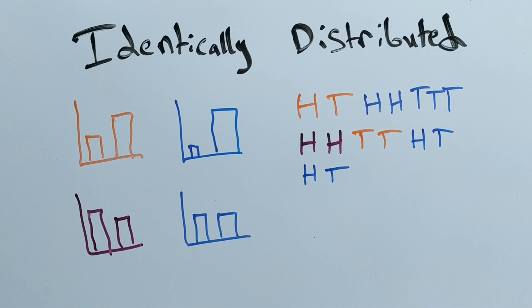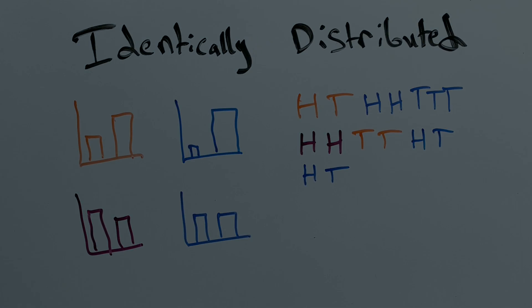In machine learning, IID often implies that the data from the training set all comes from the same process, and that that data is not related to each other.